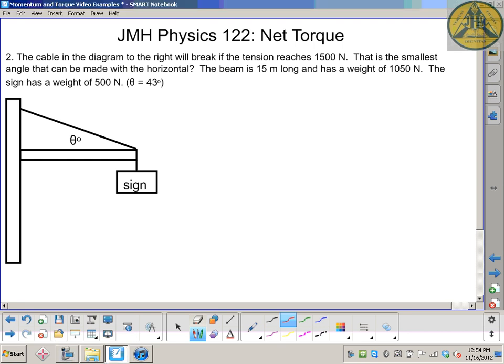All right, so this is an application of net torque problem for a grade 12 physics class. The cable in the diagram will break if the tension reaches 1500 N. What's the smallest angle that we can make without breaking the cable?